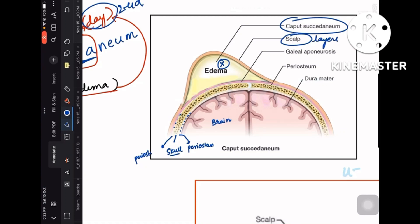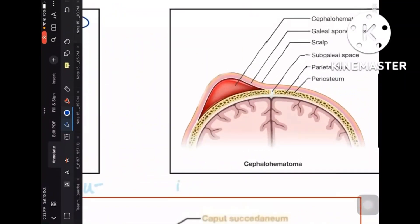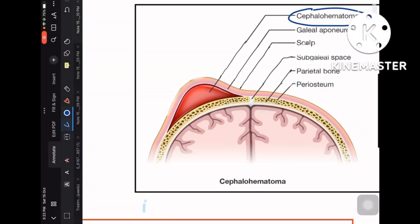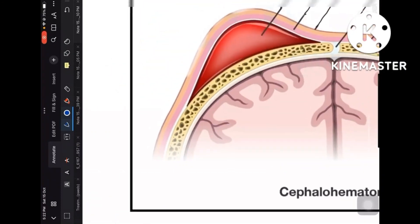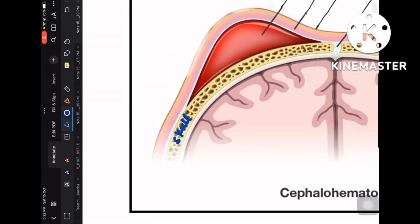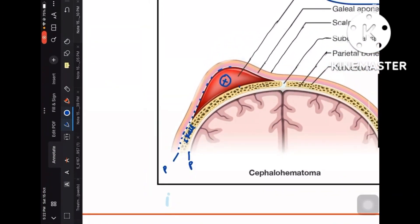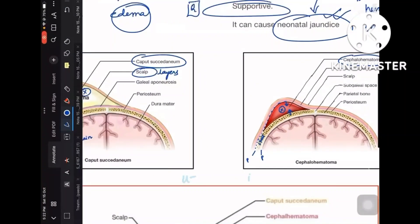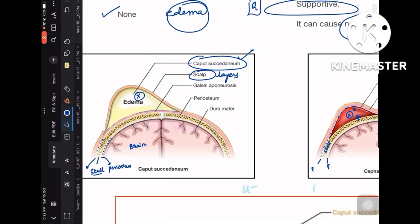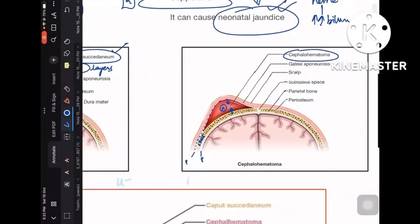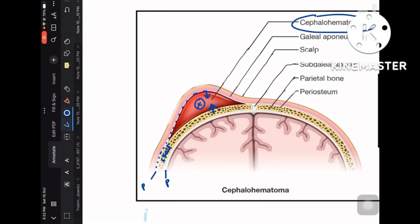Cephalohematoma, by contrast, is present just below the periosteal layer. The yellow is the skull bone, and the periosteum lines both its inner and outer surfaces. The blood collection in cephalohematoma sits above the skull bone but below the periosteal layer — this is the key anatomical point. Caput succedaneum is above the periosteum; cephalohematoma is just below it.